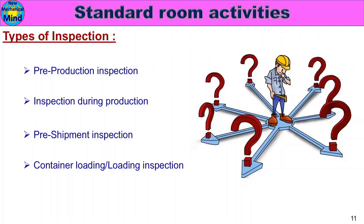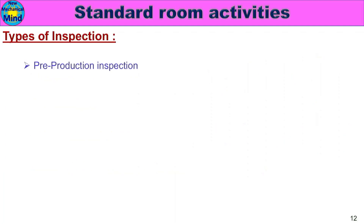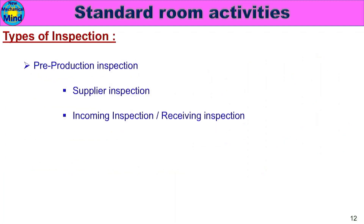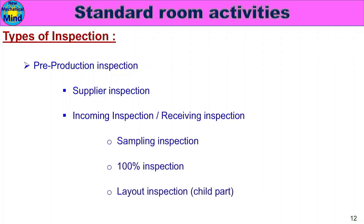There are 4 major types of inspection. First: Pre-Production Inspection — including Supplier Inspection, Incoming Inspection or Receiving Inspection, Sampling Inspection, Percentage Inspection, Layout Inspection, and Child Part inspection.